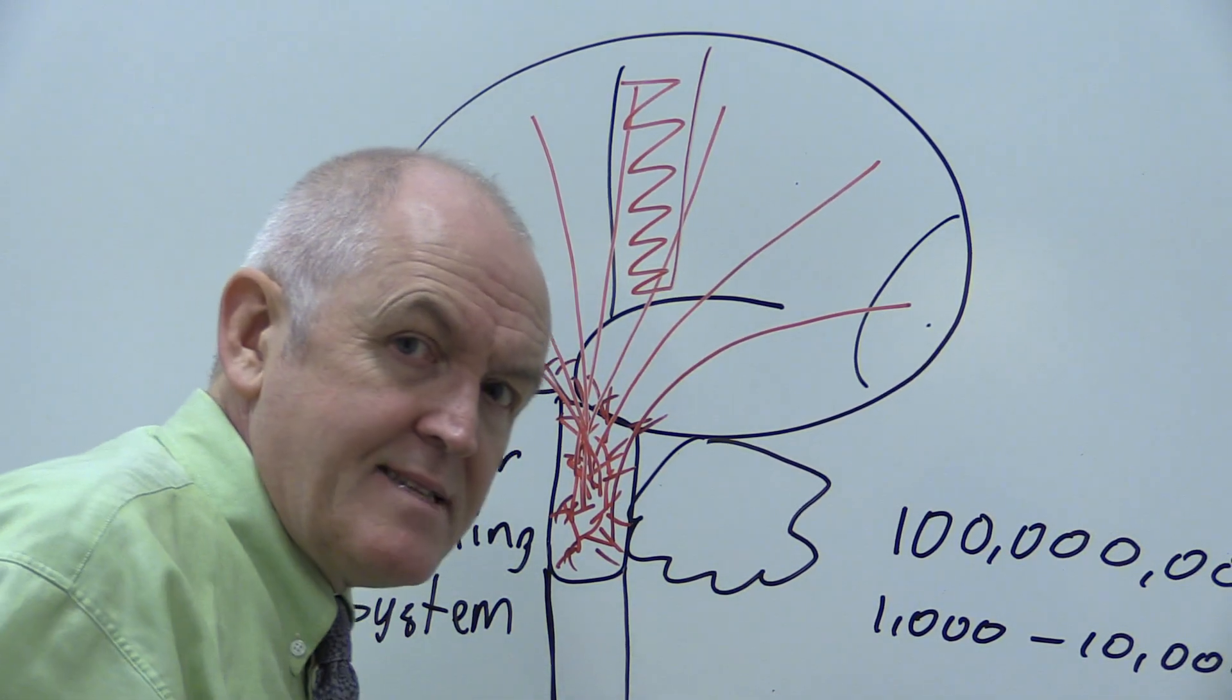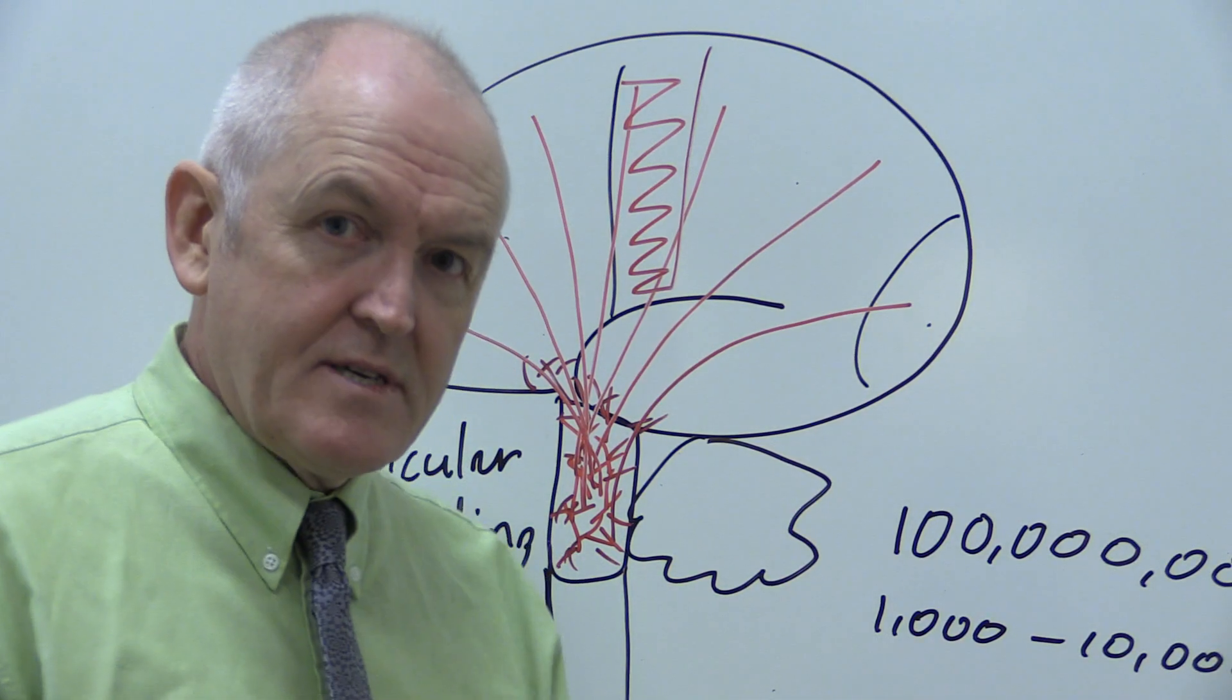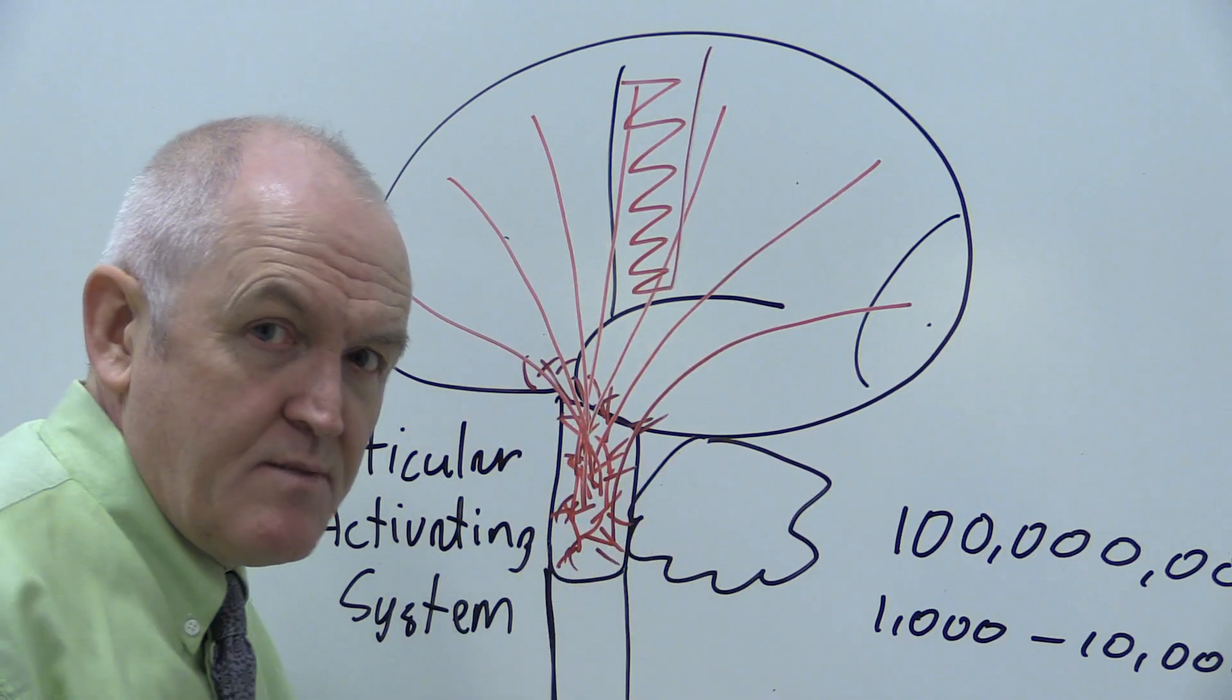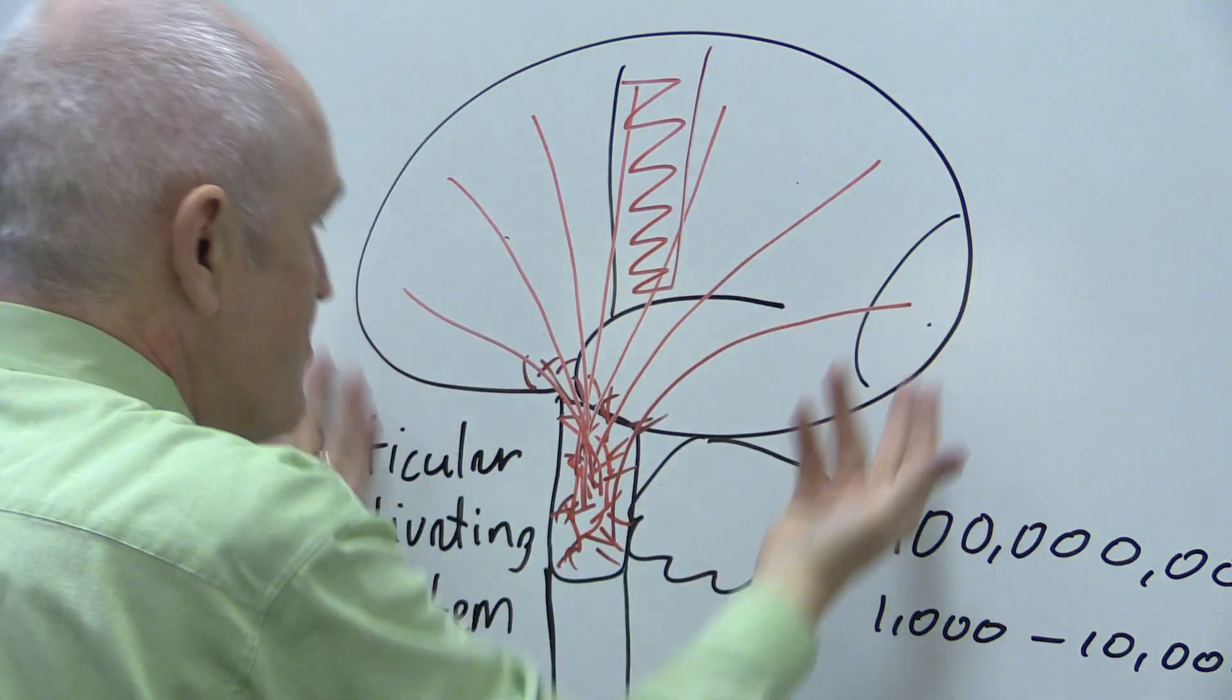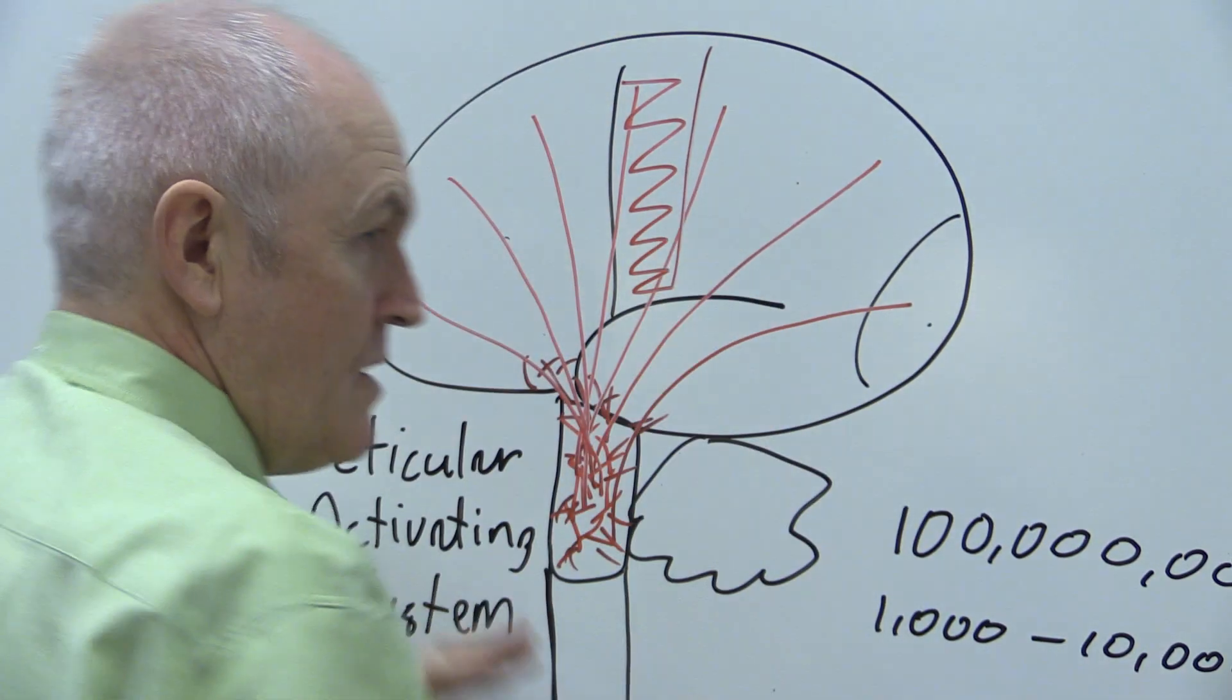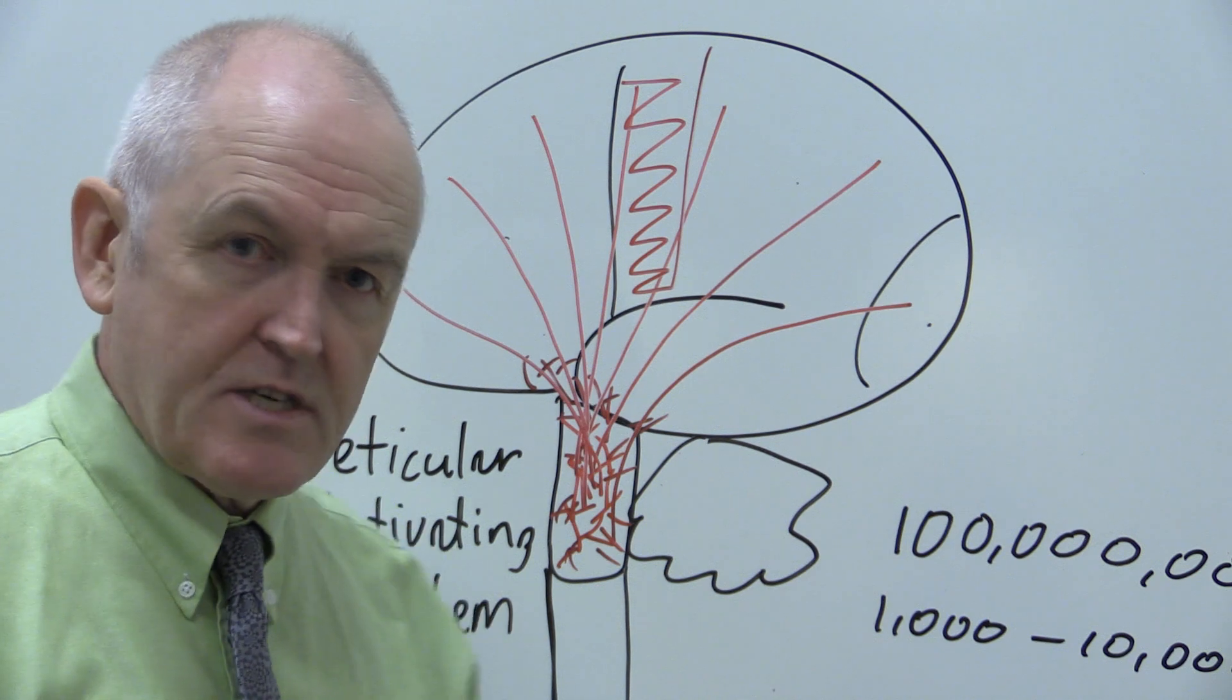We need the sensory cortex to generate the tactility, but that's no good unless we have awareness of it, and that's provided by the consciousness in the brainstem. So the consciousness is generated by the brainstem and the awareness of consciousness is experienced throughout the cerebrum, and it's the interaction between these two which gives the emergent behavior of our conscious experience.